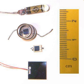Photodiodes are often used for accurate measurement of light intensity in science and industry. They generally have a more linear response than photoconductors. They are also widely used in various medical applications, such as detectors for computed tomography, instruments to analyze samples, and pulse oximeters. Pin diodes are much faster and more sensitive than PN junction diodes, and hence are often used for optical communications and in lighting regulation. PN photodiodes are not used to measure extremely low light intensities. Instead, if high sensitivity is needed, avalanche photodiodes, intensified charge-coupled devices or photomultiplier tubes are used for applications such as astronomy, spectroscopy, night vision equipment and laser rangefinding.